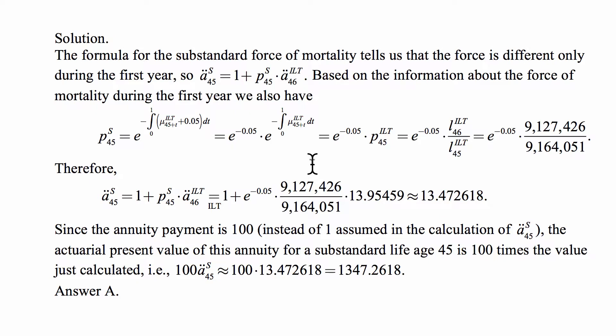So we plug that in, and this is what we get. At this point, I'm not going to calculate it because we'll just plug it into the annuity formula. The annuity at age 46 in the table is given as 13.95459.